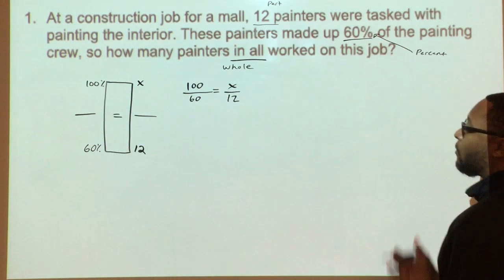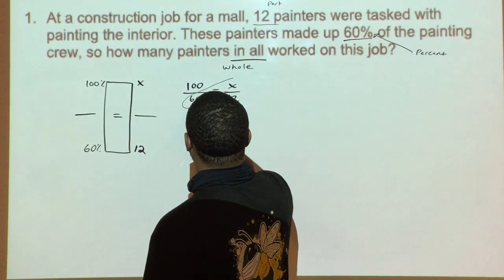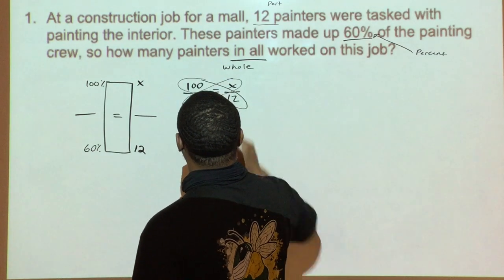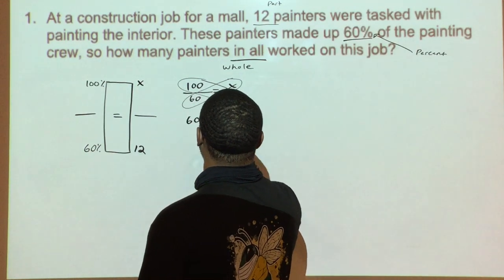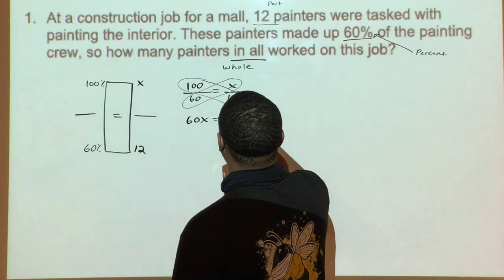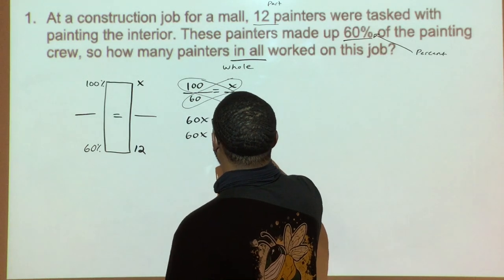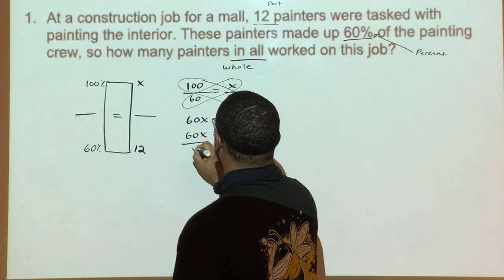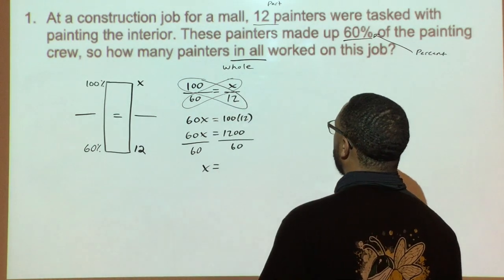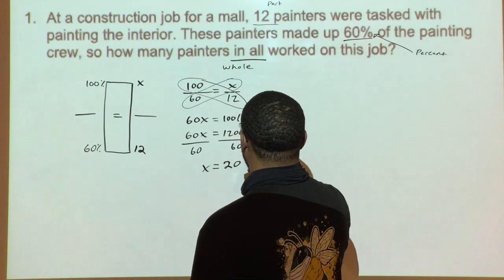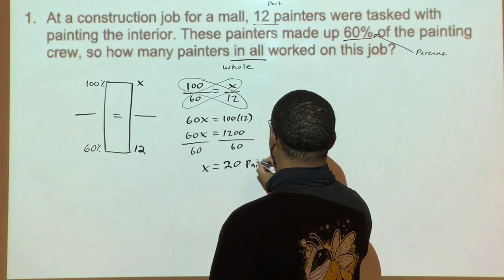We're going to solve this proportion using cross products. 60 times X gives you 60X, equals 100 times 12, which is 1200. Dividing both sides by 60 gives me X equals 20. So there were 20 painters on this site.